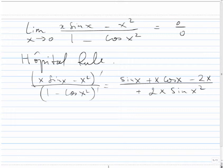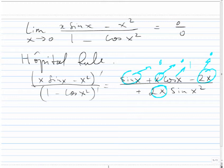Again, if we look at the limit, we see the top goes to 0 because sin goes to 0, x goes to 0, cos(x) goes to 1, and 2x goes to 0. So the numerator goes to 0. The denominator also goes to 0 since sin(0) goes to 0. So we have 0 over 0 again, and therefore we need to use L'Hôpital's Rule a second time.